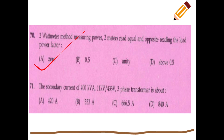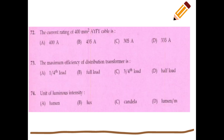The secondary current of a 400 kVA, 11 kV to 433 V three-phase transformer: using V1/V2 = I2/I1, the answer is 533 A.